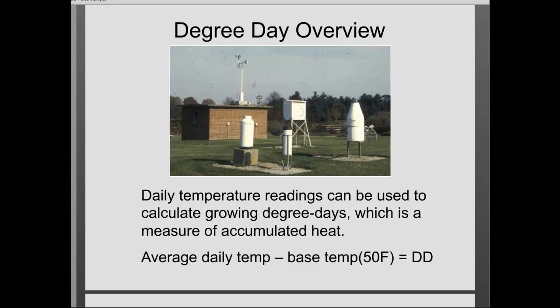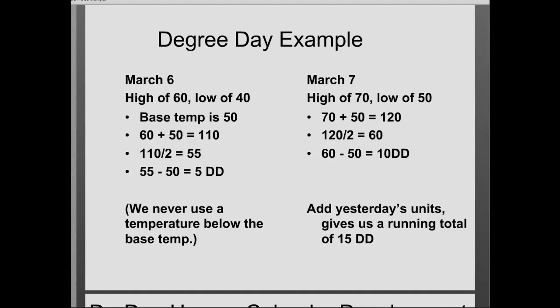Here's a quick example. On March 6th, we had a high of 60 and a low of 40. We never use a temperature below our base in the calculation, so instead of 40, we use 50 as the low. We calculate: 60 plus 50, divided by 2, gives an average daily temperature of 55. Subtract the base of 50, and we get 5 degree day units accumulated on March 6th. On March 7th, high of 70, low of 50 — we get 10 degree day units. Add those together and we have a running total of 15 degree day units.